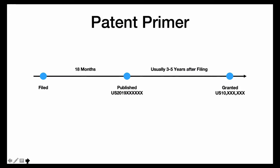Usually somewhere in the three to five year period after filing, it will grant as a US patent. Patents are granted in sequential order. We are in the 10 millions right now, but you'll see some patents in the case of Waymo that are in the nine millions and even a few in the eight millions.